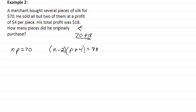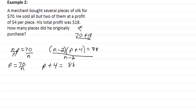We want to know how many pieces he sold. Dividing by n gives P equals seventy over n, and dividing the second equation by n minus two gives P plus four equals eighty-eight over n minus two. Substituting gives us seventy over n plus four equals eighty-eight over n minus two.